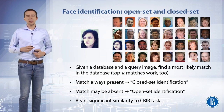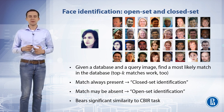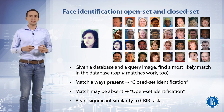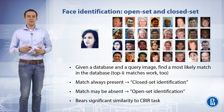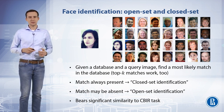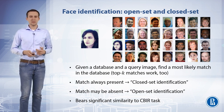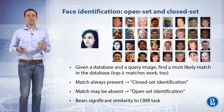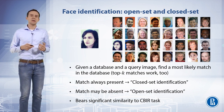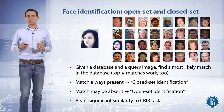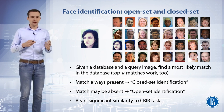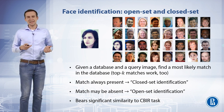Identification tasks build upon verification but extend its formulation. Closed set identification is the classic performance measure used in the automatic face recognition community. In closed set identification, the basic question asked is: whose face is this? In this task, a probe is always someone in the gallery. In open set identification, the person in the probe does not have to be somebody in the gallery. The basic question asked is: do we know this face? If the system decides that a person is in the gallery, then it has to report the identity of that person.